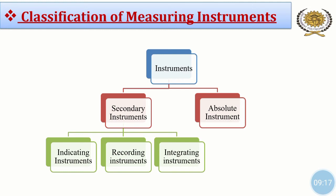Now let us move towards the classification of measuring instruments. Electronic measuring instruments are divided into two types: secondary instruments and absolute instruments. Secondary instruments are again divided into three types: indicating instruments, recording instruments, and integrating instruments.